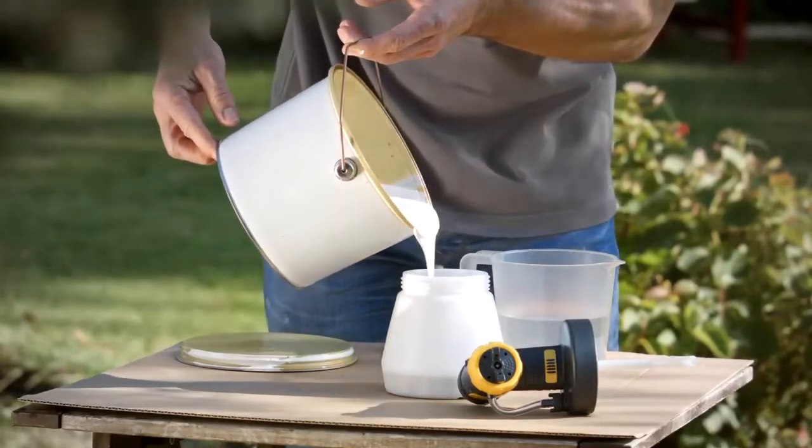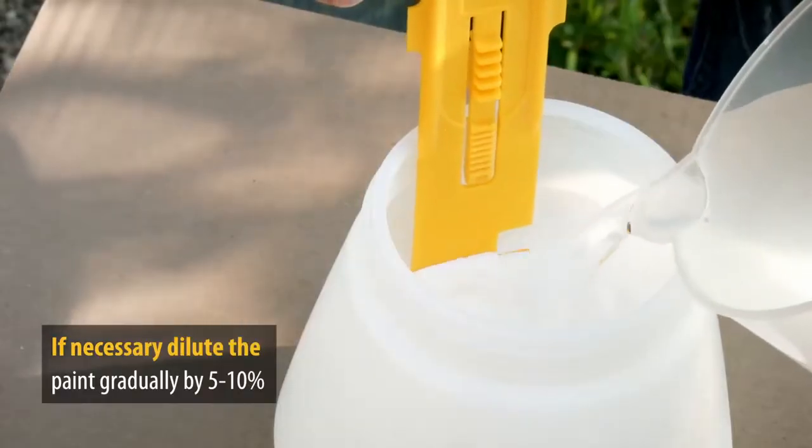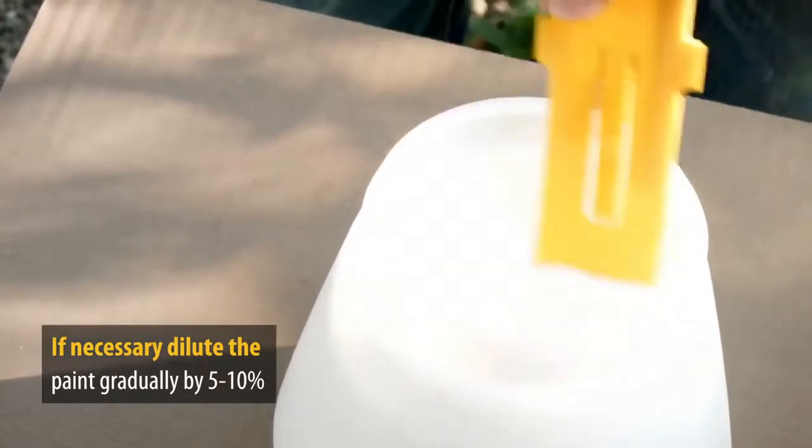One clever addition to help you do so is the supplied stirrer, where each notch represents a 10% dilution. Then stir well.